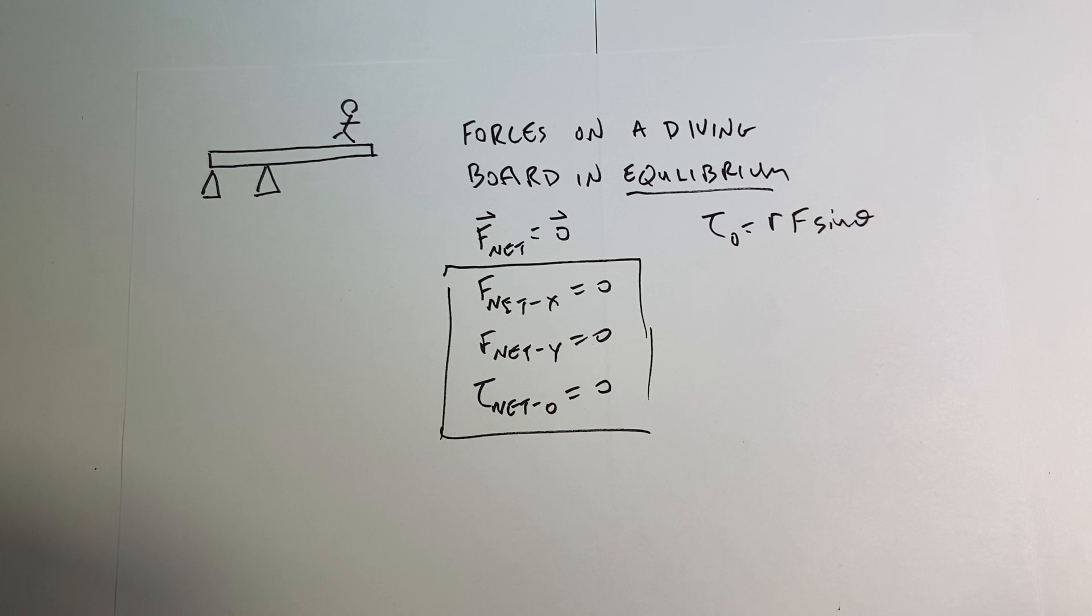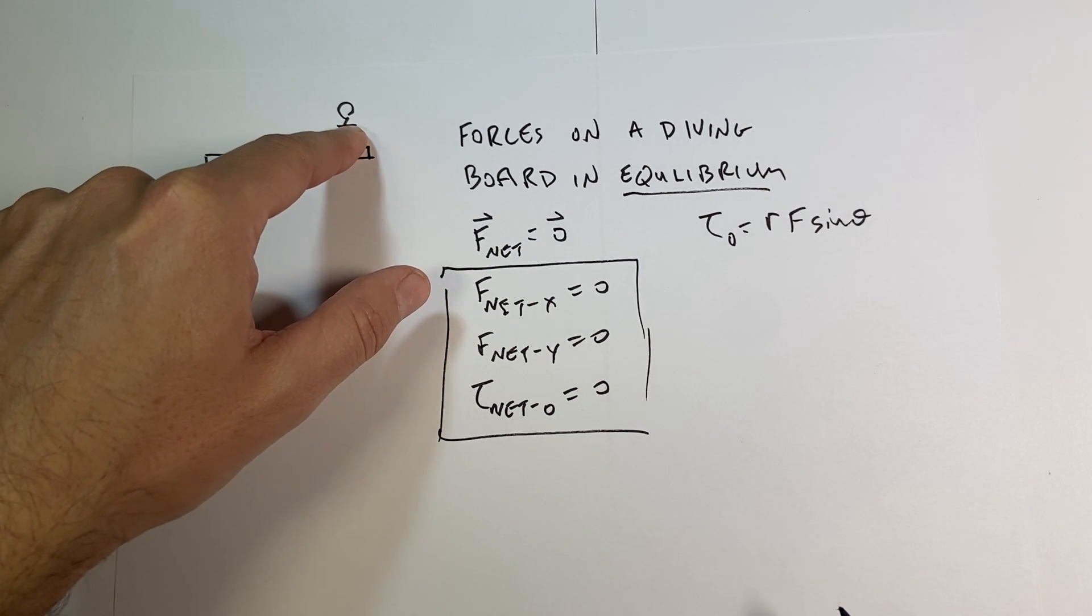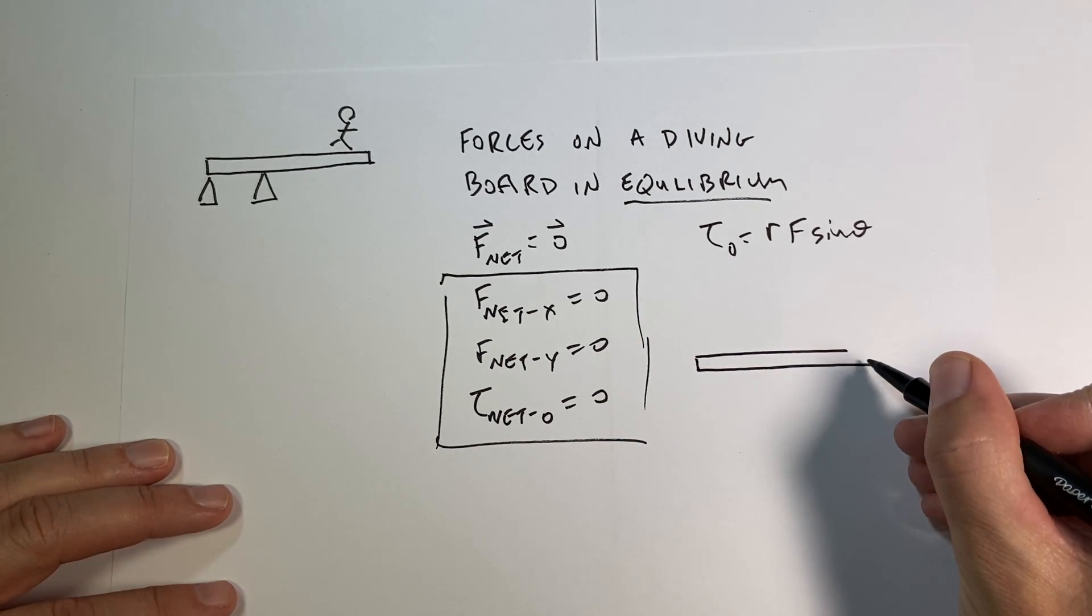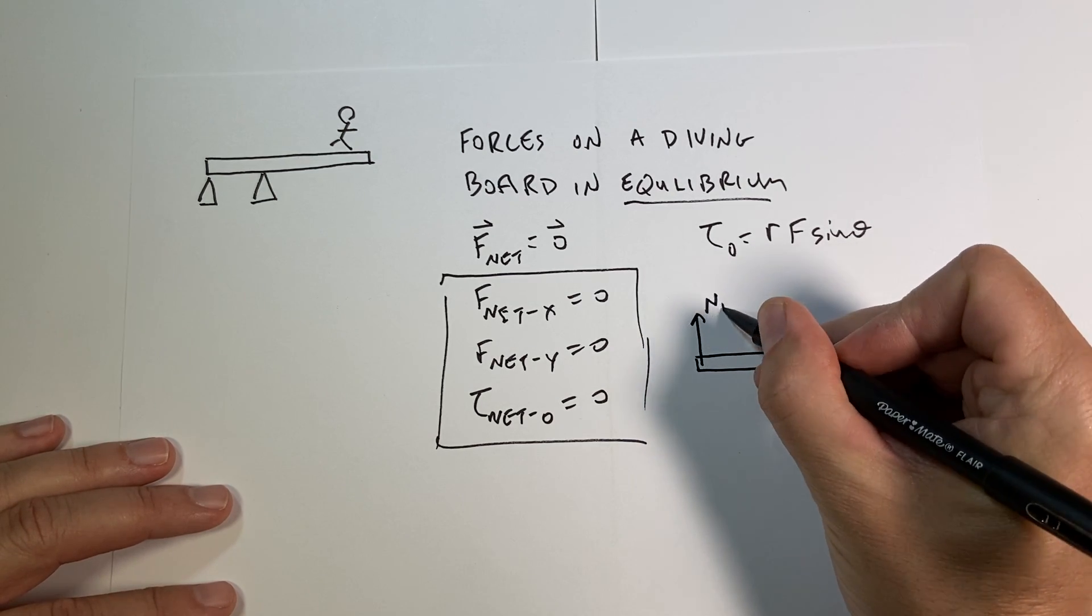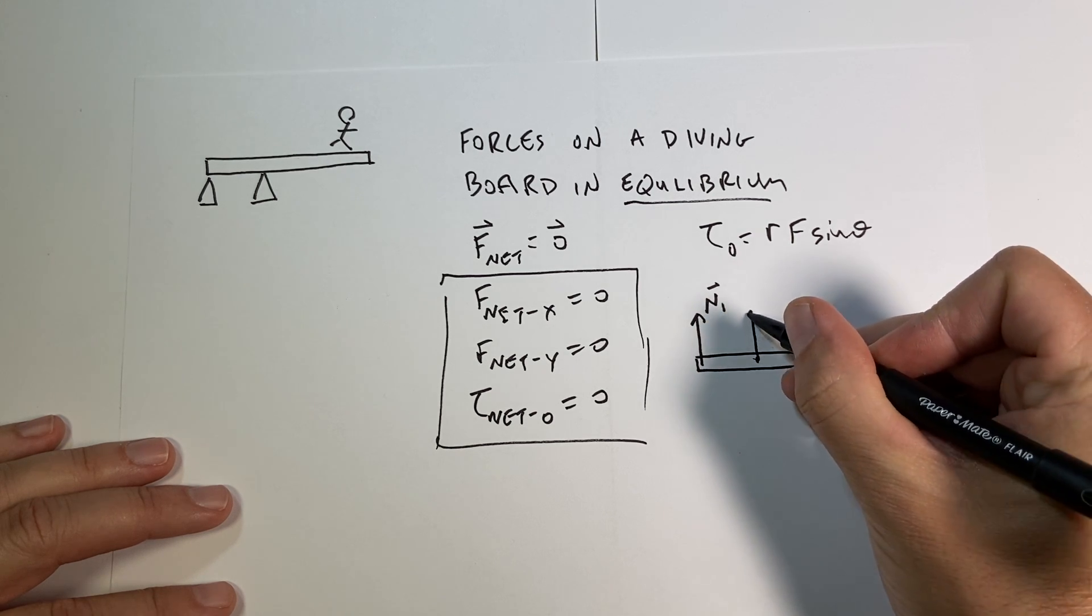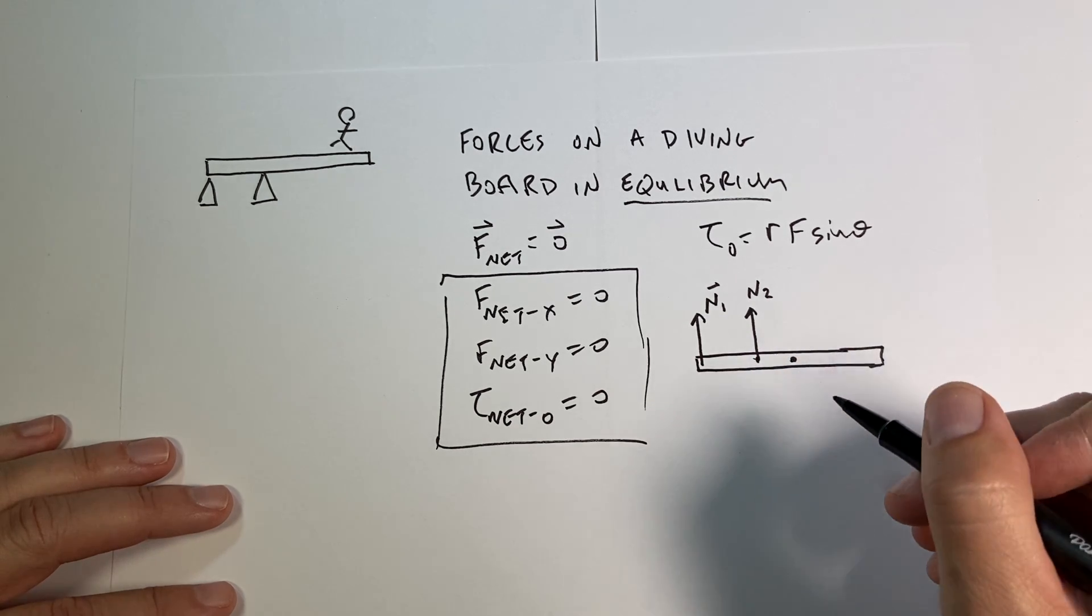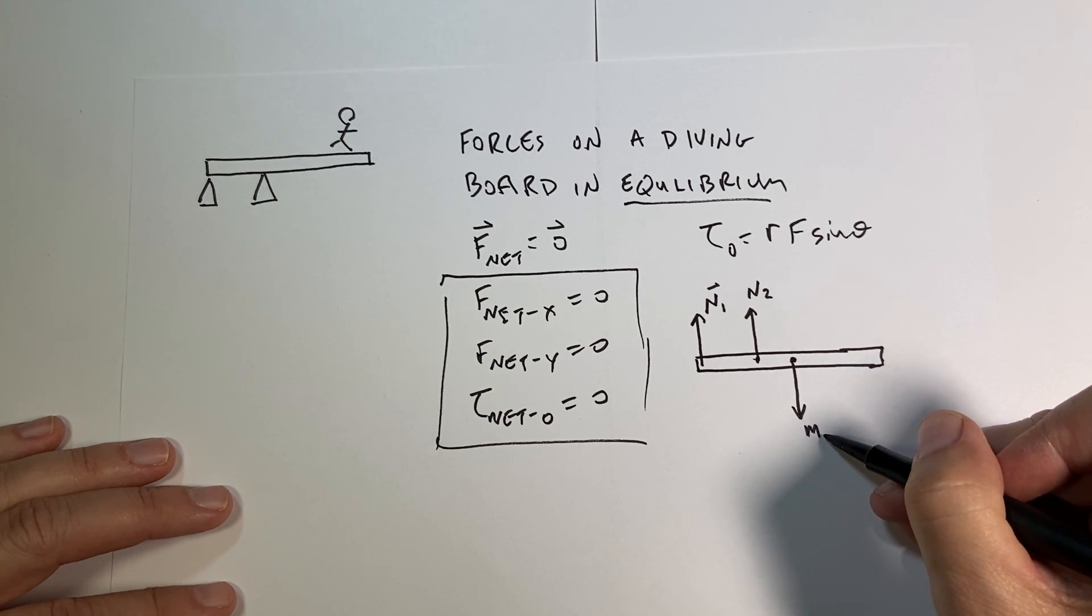First, we think about what is pulling on it without touching. And in that case, there's only one thing, and that's the gravitational force. So I have the gravitational force on the diving board. And then I have the things that are touching it: these two support points, and then the diver. So let me just redraw the diving board as just the board. I don't care about anything else. I only care about the board. So I have this, I'll call this N1. And then I have this one, N2.